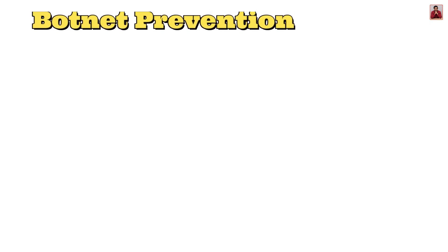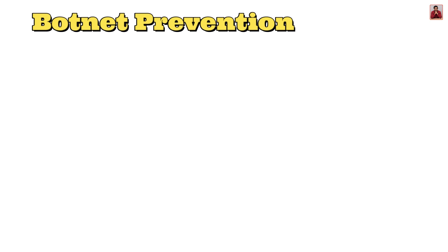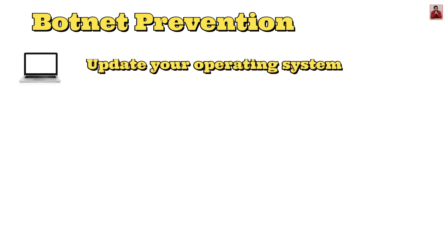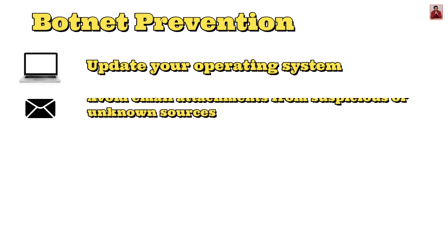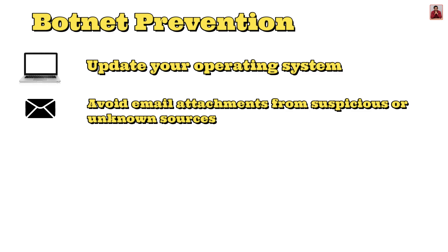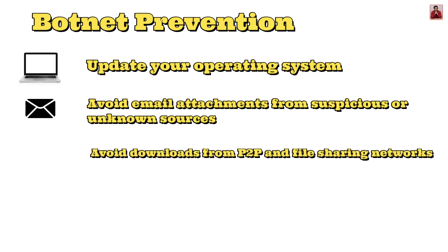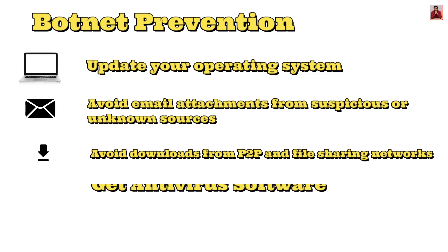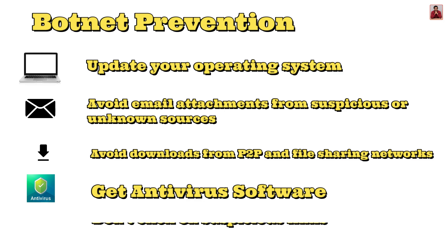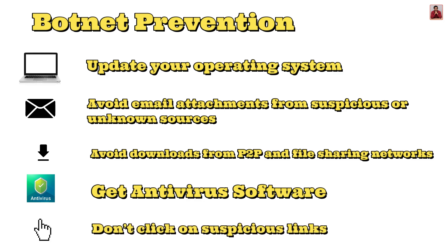Preventing botnet infection requires a comprehensive strategy that includes good surfing habits and antivirus protection. Key steps include: updating your operating system, avoiding email attachments from suspicious or unknown sources, avoiding downloads from peer-to-peer and file sharing networks, getting antivirus software, and not clicking on suspicious links.